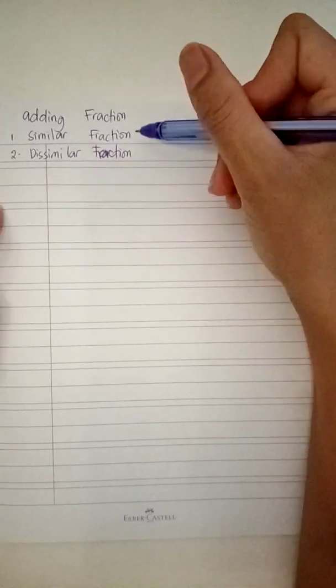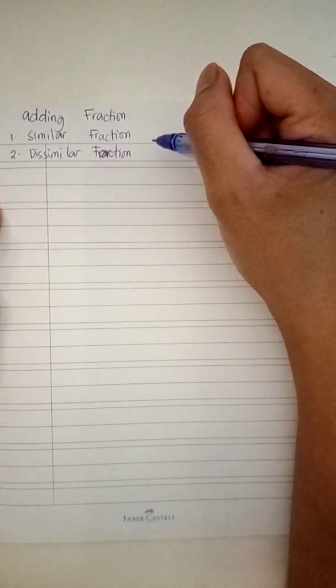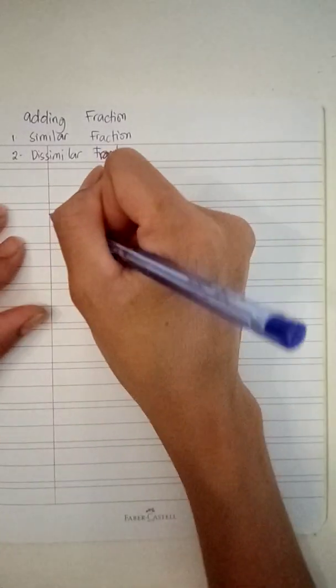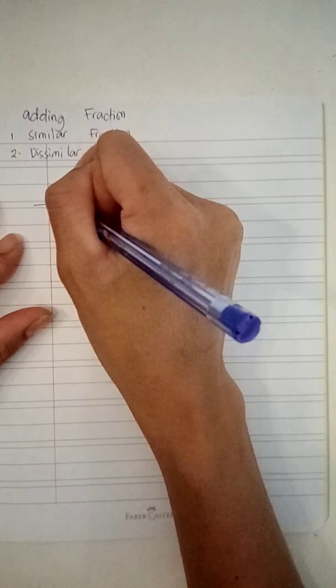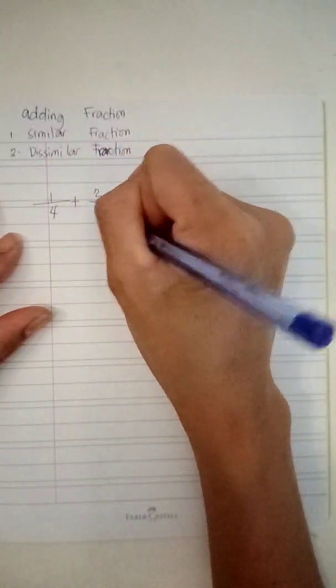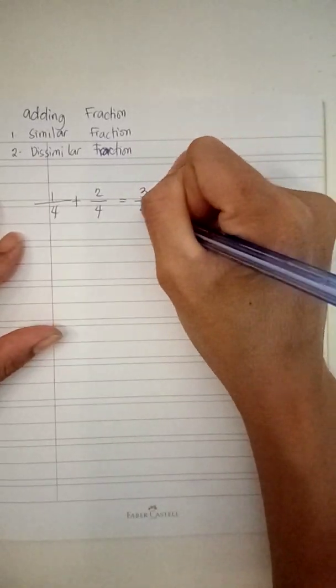When you say similar fraction, these are the fractions that they have common denominator. For example, one-fourth plus two-fourths equals three-fourths.